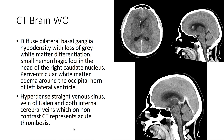Taking a look at the CT of the brain without contrast, we note that there's diffuse bilateral basal ganglia hypodensity with loss of gray-white matter differentiation. There's also a small hemorrhagic foci in the head of the right caudate nucleus.